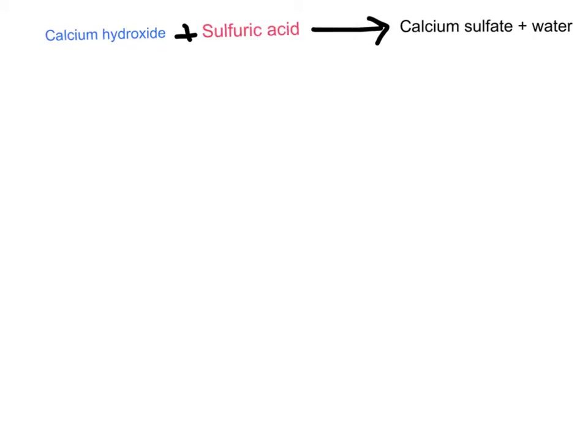Let's do a slightly trickier one. I've written out the word equation already: calcium hydroxide is the base, sulfuric acid is the acid, and that forms calcium sulfate and water. The calcium has come from the metal in the base, and sulfate is the non-metal component that has come from the sulfuric acid. We also know that water is formed in this reaction.